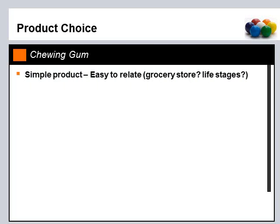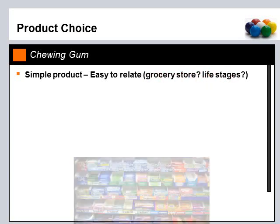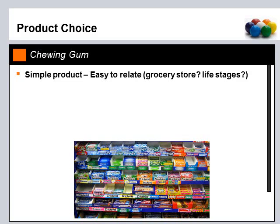The product choice I made was chewing gum. I wanted to go through several reasons why I chose this product. First, it's a very simple product — it's very easy to relate to. A lot of us can relate to the grocery store checkout aisle and life stages specifically. Think about when you went to the grocery store as a small child, and the differences in what you looked at regarding chewing gum compared to what you look at now as an adult. Mostly everyone has used this product, so you're obviously familiar with it.